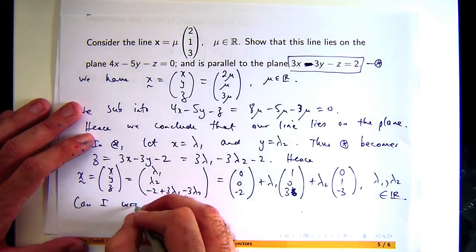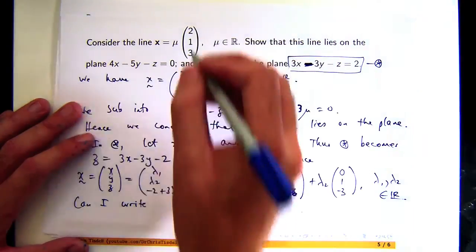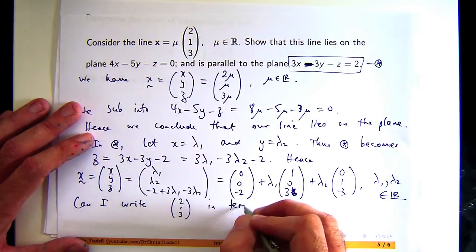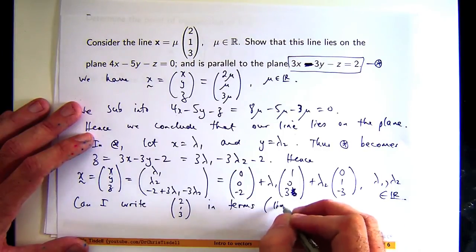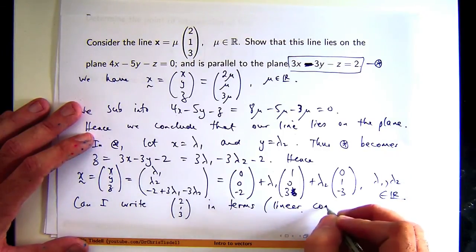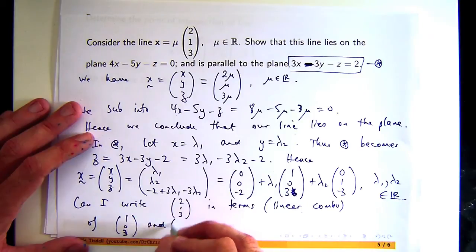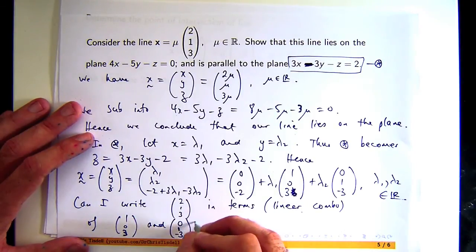Can I write or describe the vector parallel to this line?